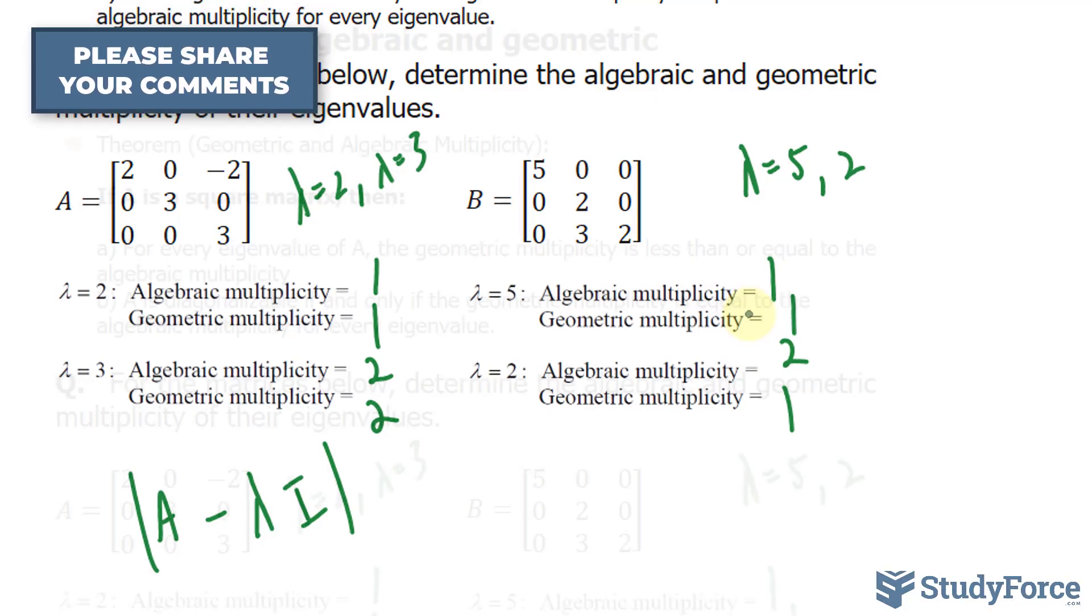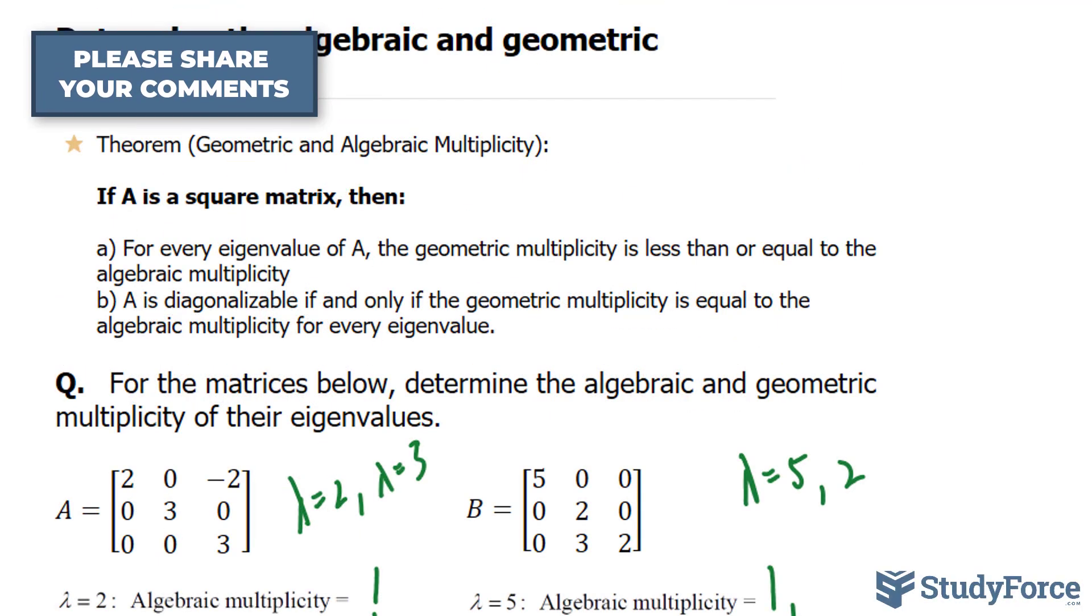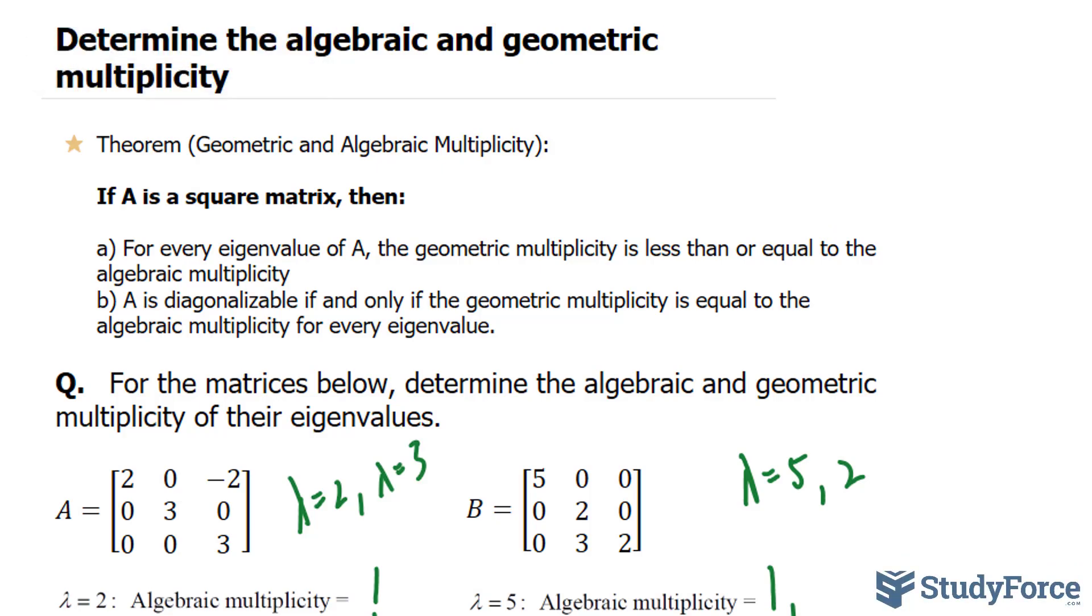And so there you have it. That is how to determine the algebraic and geometric multiplicity of a matrix to determine if it is diagonalizable.